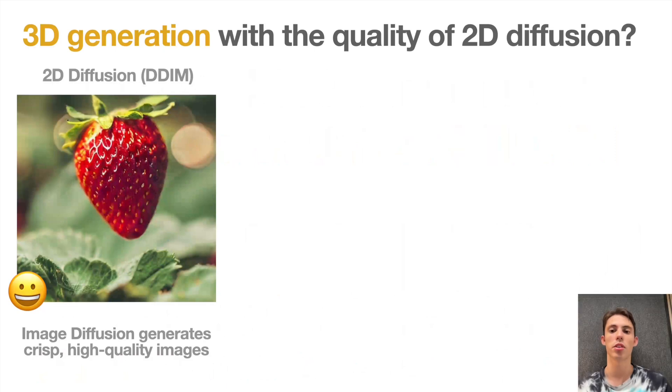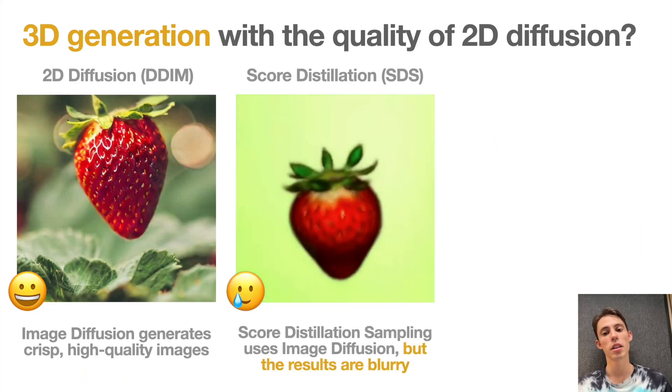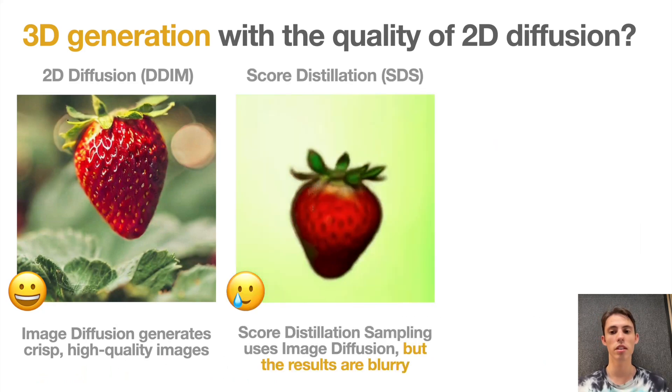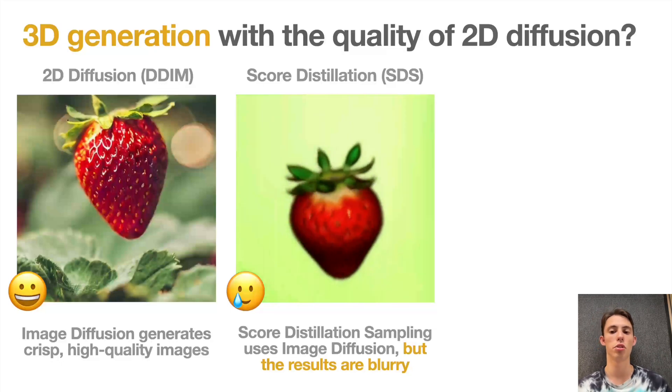Recently the field of image generation experienced a significant improvement with the development of diffusion models. As you might know, diffusion models are capable of generating high quality and realistic images. SCORE distillation at the same time is a technique that suggests to use a pre-trained and fixed diffusion model to generate 3D shapes.